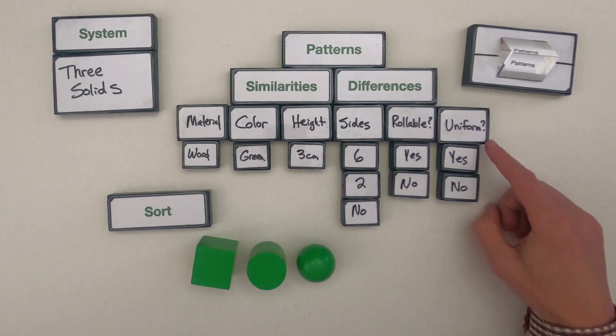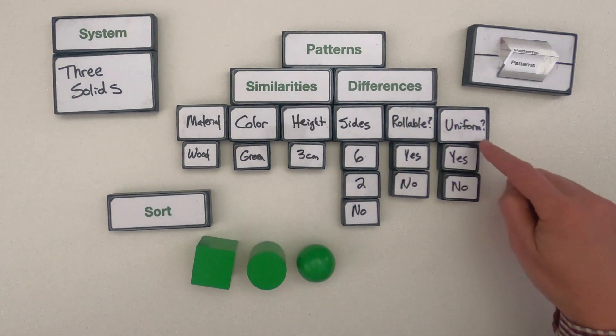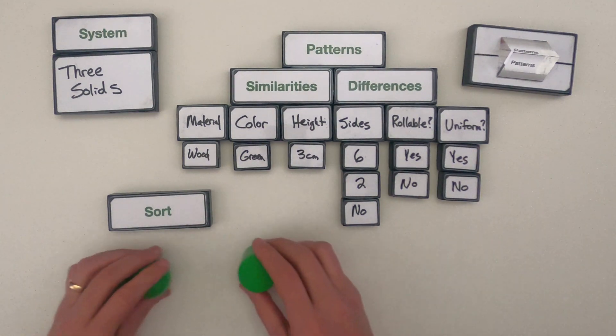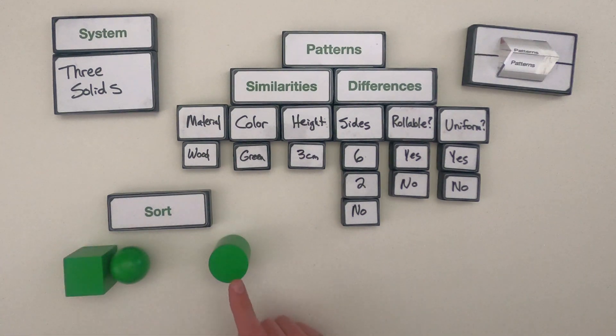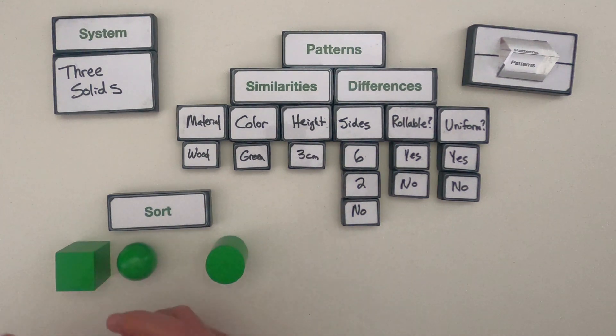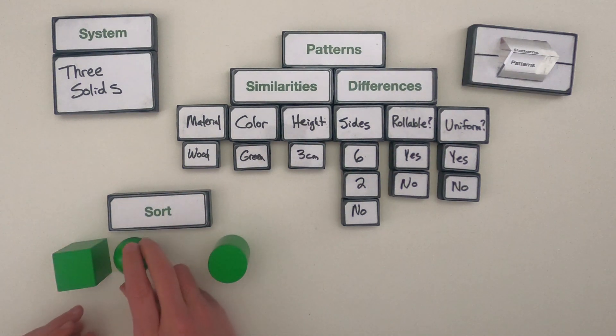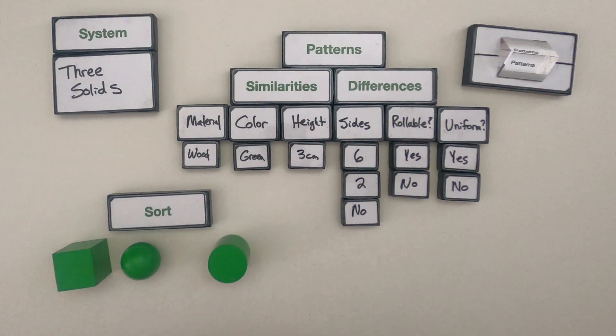So now I can look at these patterns of differences. Are they uniform or not? And I could say well the cylinder, if I sort them, the cylinder is not uniform. It has a side that's flat and it's going to have a side that's rounded. Whereas the sphere and the square are going to be uniform throughout. No matter which way I turn it they're going to look the same. So that tells me a little bit about these objects.